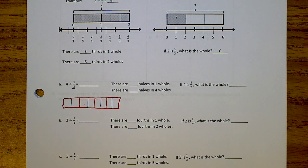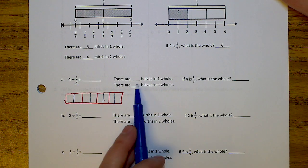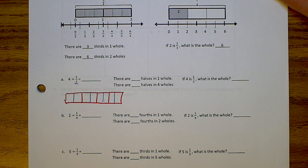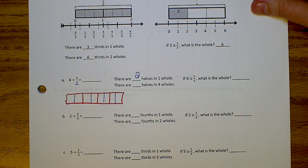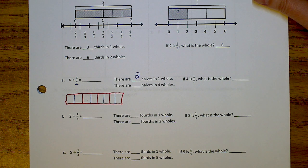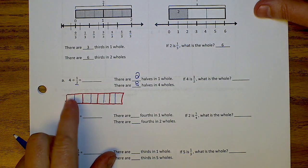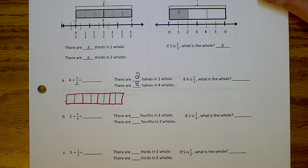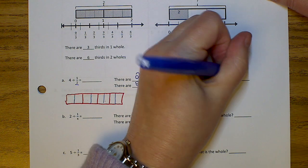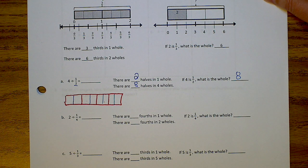Make sure you're drawing this because that's part of the assignment tonight — drawing the tape diagrams. How many halves are in one whole? Two. How many halves are in four wholes? You counted: one, two, three, four, five, six, seven, eight. So four divided by one half equals eight.